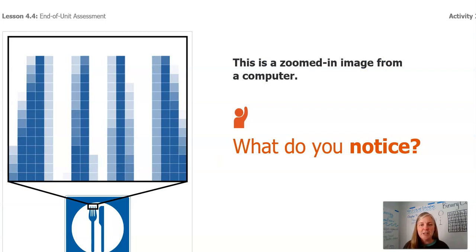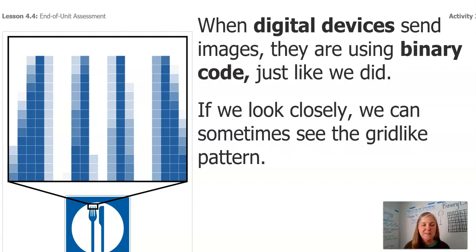Look at this image here. It's a zoomed-in image from a computer. What do you notice? Yeah, I'm hearing you guys. I hear Minecraft, pixels. It's pixelated. It's like the grid work that we've been doing. When digital devices send images, they're using binary code. See this over my shoulder here? We talked about that with the ones and zeros, just like we did.